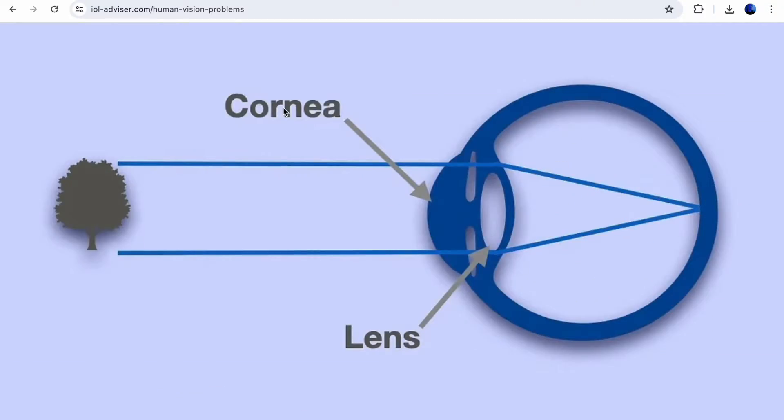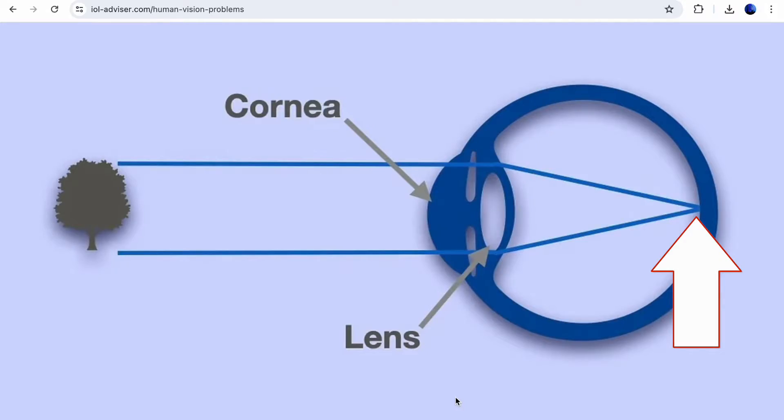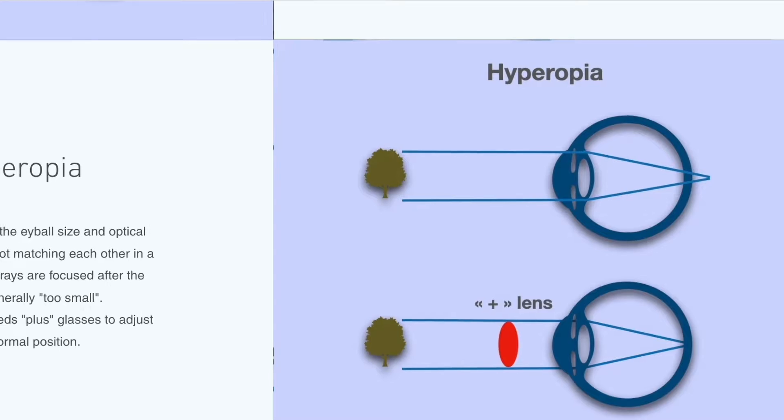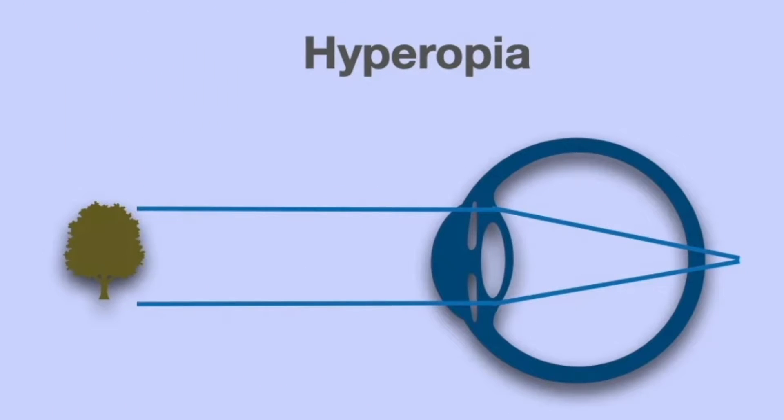Coming back to hyperopia. Our eye is a combination of two lenses — the cornea and the crystalline lens — and the idea of this system is to focus all incoming light rays directly to the retina. The status of the eye when the optical power of the cornea and lens is perfectly aligned with the axial length of the eye — the total length of the eyeball — is called emetropia. In the case of hyperopia, in the vast majority of cases, the eyeball size is smaller than normal.